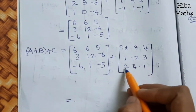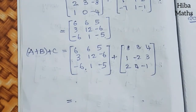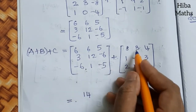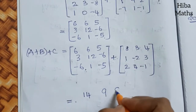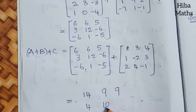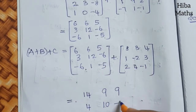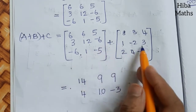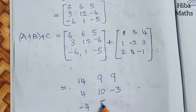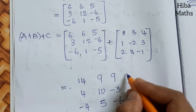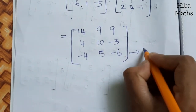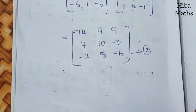Adding (A+B) + C: 6+8=14, 6+3=9, 5+4=9, 3+1=4, 12+(-2)=10, -6+3=-3 (larger number has minus), -6+2=-4, 1+4=5, -5+(-1)=-6. So RHS = (A+B)+C = [14,9,9; 4,10,-3; -4,5,-6]. This is result 2.